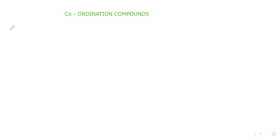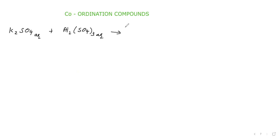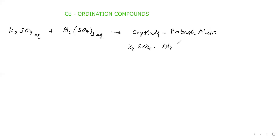We will take a potassium sulphate solution and an aluminium sulphate solution. Both let us mix and bring the solution to a saturated solution. We will go for crystallization and get crystals. The crystal's name is called Potash alum. The formula of Potash alum is K₂SO₄·Al₂(SO₄)₃·24H₂O. Potash alum we got.